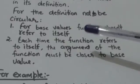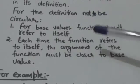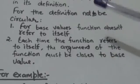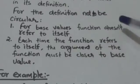Second property is each time the function refers to itself, the argument of the function must be closer to a base value.